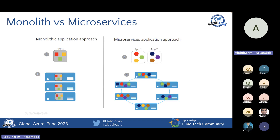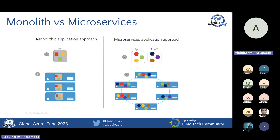In microservices, you'd have separate repositories and in most cases separate databases for these individual services. The advantage is you can scale components individually. For instance, if your company runs a promotion and you expect a lot of visitors, it might put pressure on the pricing API and location API. You can scale just the pricing component independently of other deployed components. Scalability is one key advantage of microservices.